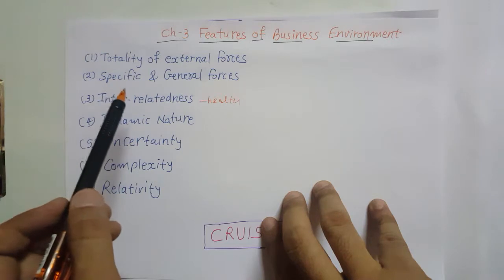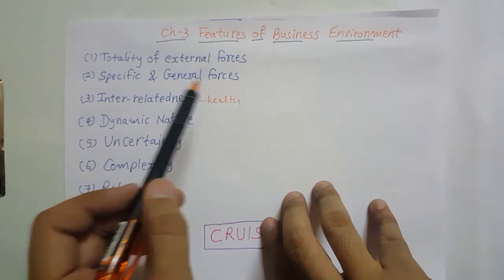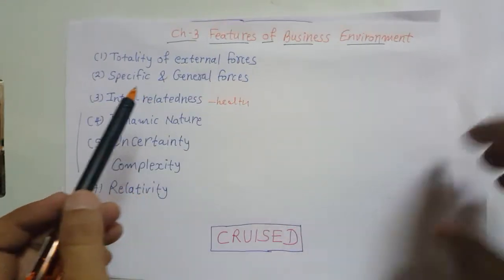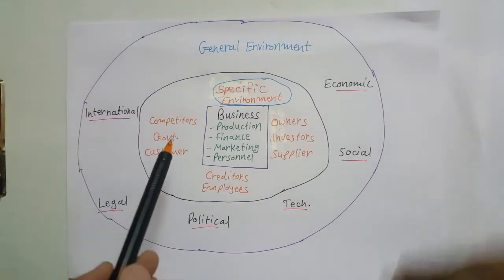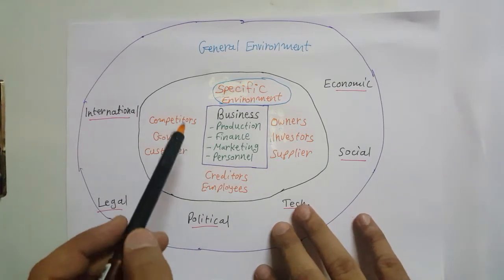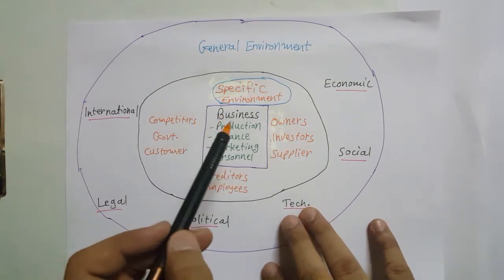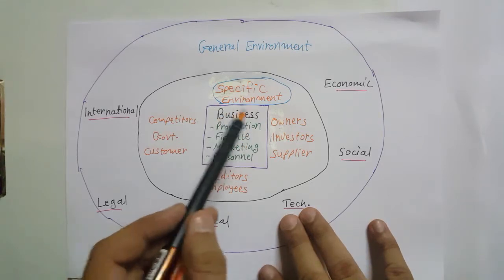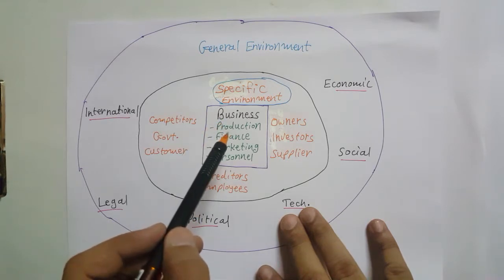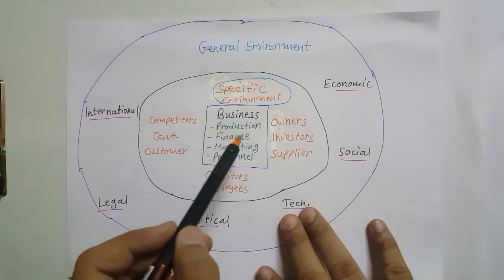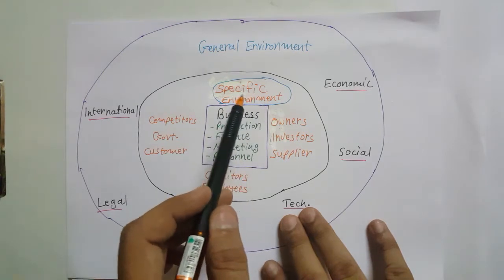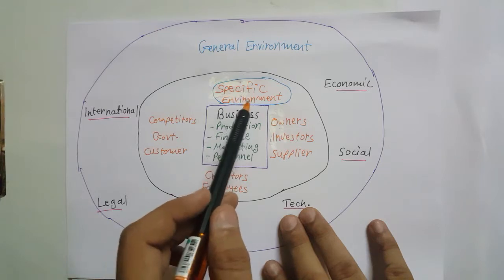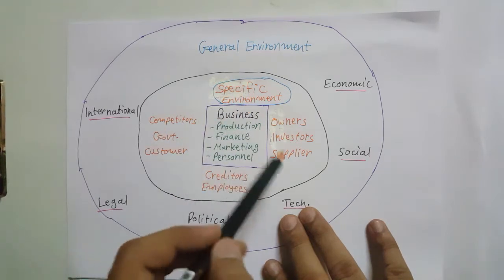The second feature is specific forces and general forces — two types of forces in business environment. In this diagram, businesses are at the center with production, finance, marketing, personnel — all in control of the business, so they don't constitute business environment. Outside we have specific environment, meaning specific forces, which have a direct impact on our business.